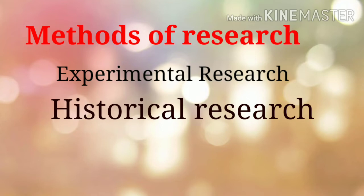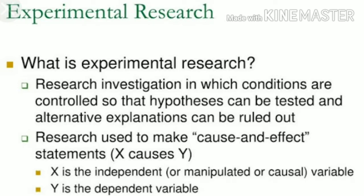The first one is experimental research. In experimental research, the relationship between two or more variables is tested by performing experiments involving manipulation of stimuli, environment, or an independent variable. The relationship between the dependent and the independent variable is tested under a controlled setting. Independent variables are manipulated and their effect on the dependent variable is observed under controlled conditions to interpret the relationship. It is one of the most scientific research designs.